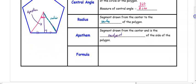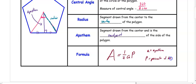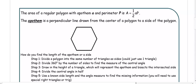The apothem is very important because it is used for area. To find the area of a regular polygon, it equals one half times the apothem times the perimeter, where a represents the apothem and p represents the perimeter.